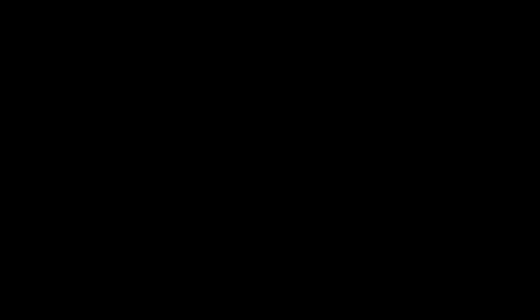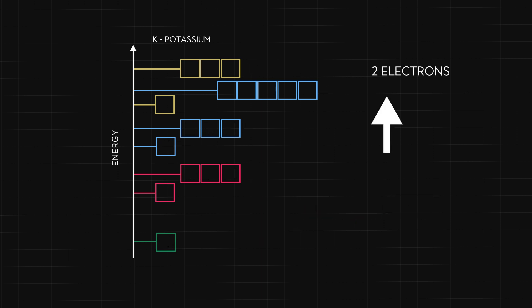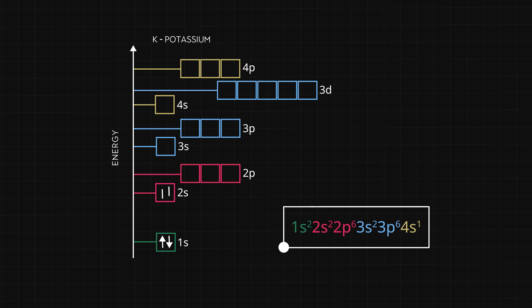Let's look at the potassium atom as an example. It has a total of 19 electrons. We start by filling the orbitals with the lowest energy and move up. Each energy level gets two electrons — one with spin up and one with spin down. When completed, we get 1s², 2s², 2p⁶, 3s², 3p⁶, and 4s¹.